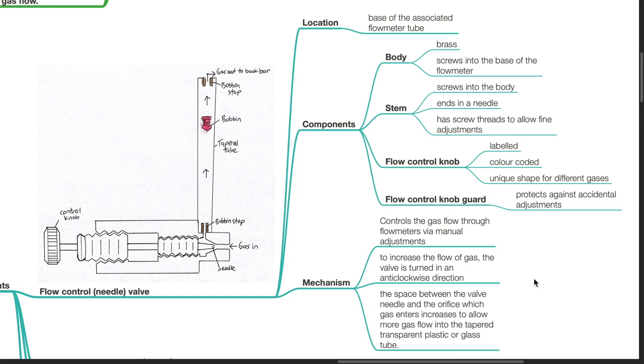Flow control knob: It is labeled, color coded, and has a unique shape for different gases. Flow control knob guard may be present to protect against accidental adjustments.